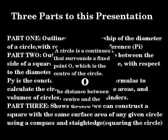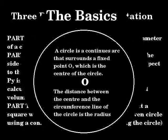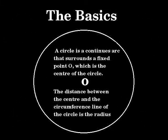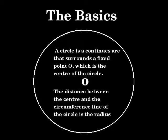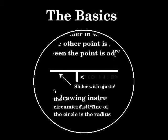What is a circle? A circle is a continuous arc that surrounds a fixed point O, which is the center of the circle. The distance between the center and the circumference line of the circle is the radius. Notice that there are no straight lines in a circle — a circle is a continuous curved line arc with no beginning and no end.